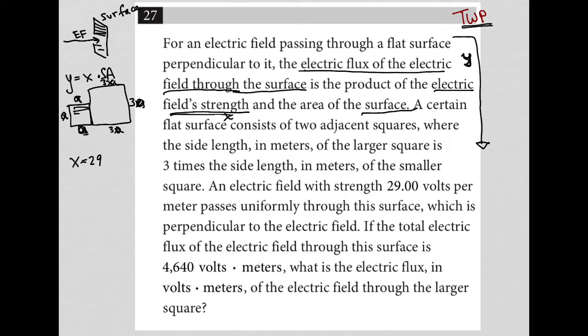passes through uniformly through this surface. Okay, which surface? Well, the surface made up of these two squares. So I can find the surface area of these two squares because the area of this small square is just going to be A squared, right? Side times side. And the area of the large square will be 9A squared. Again, side times side. So the total surface area for those two squares side by side would be 10A squared.